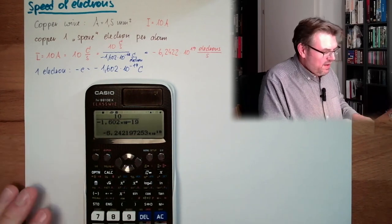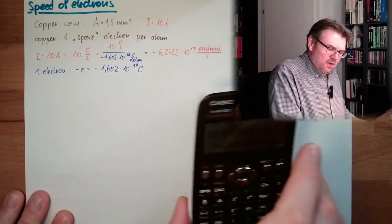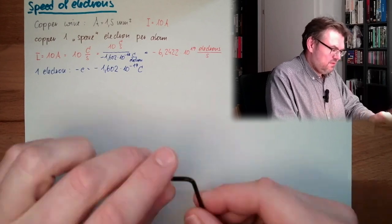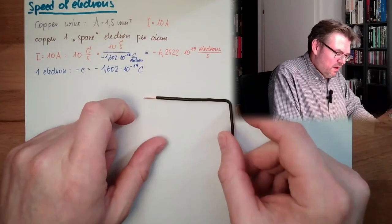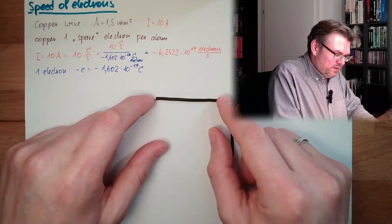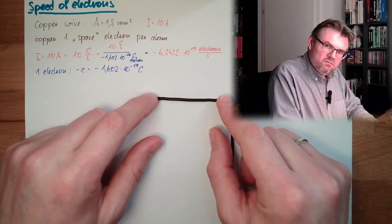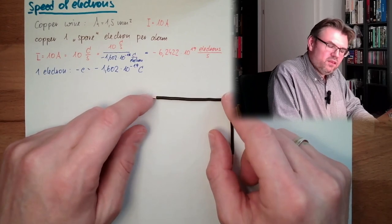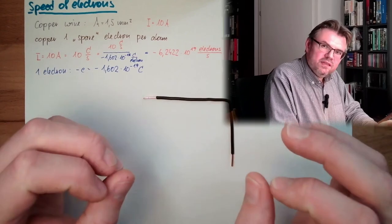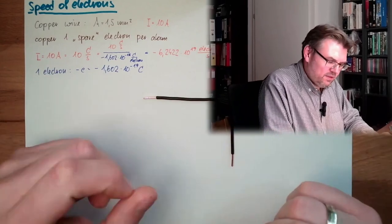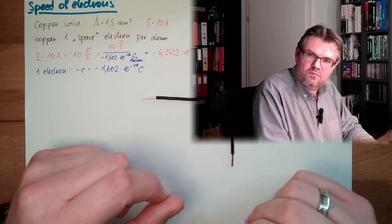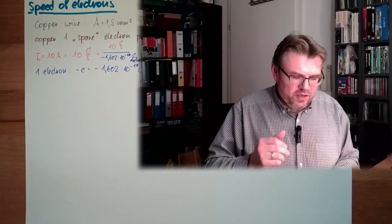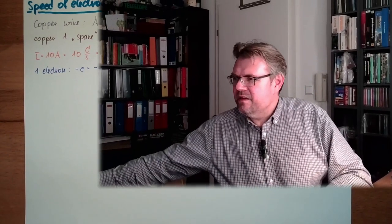We have roughly 10²³ atoms per cubic centimetre inside there — that was our rough estimation. Today we want to calculate it exactly. I have here open the Wikipedia page of copper, and what we need is the density of copper.